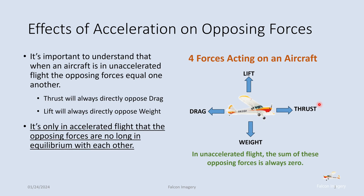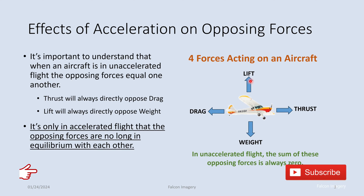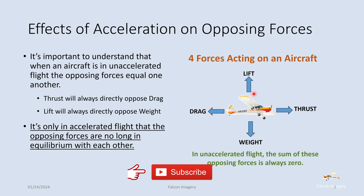It's only in accelerated flight that the opposing forces are no longer in equilibrium with each other. If we look over here to the right, we've got a lift and a weight — force vectors — that oppose each other, and we've got drag and thrust. If these forces are equal in value, the aircraft has a net result of thrust and drag of zero. Similarly, if lift and weight are equal, the net sum force of the two is equal to zero.